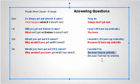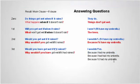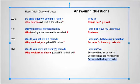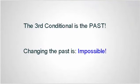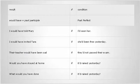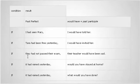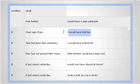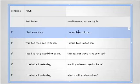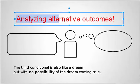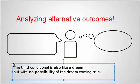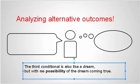The third condition is the past — it's impossible to change it. We have many situations where we say 'I would have...' For example: 'I would have told Mary if I'd seen her.' If we switch it: 'If I'd seen Mary, I would have told her.' The truth is I hadn't seen Mary and I didn't tell her. However, if I had seen her, I would have. This is analyzing alternative outcomes for the speaker. The third conditional is like a dream, but with no possibility of the dream ever coming true.